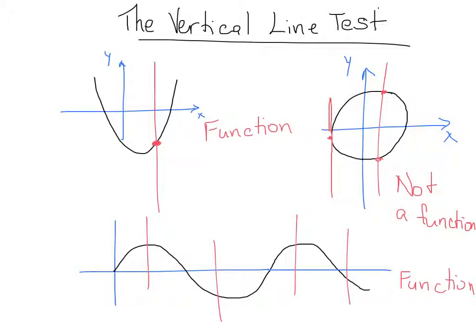The reason the vertical line test works is because each x value is allowed only one y value. If a vertical line touches more than once — like it did with our circle — that x value actually has two y values. So for example, if x equals one, it could have both (1, 3) and (1, -3), and that's totally not allowed, which is why the circle is not a function.